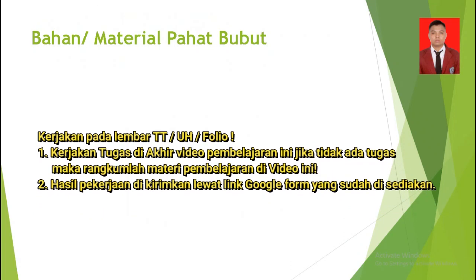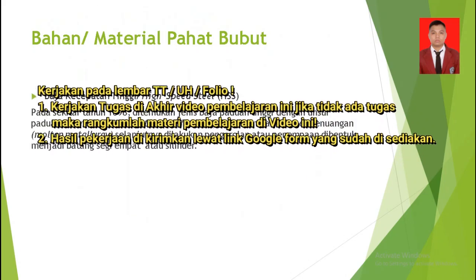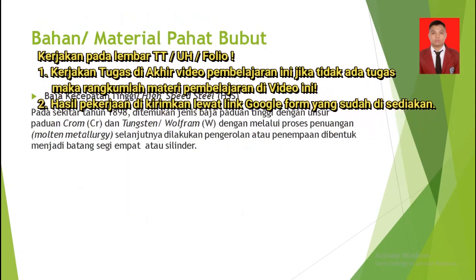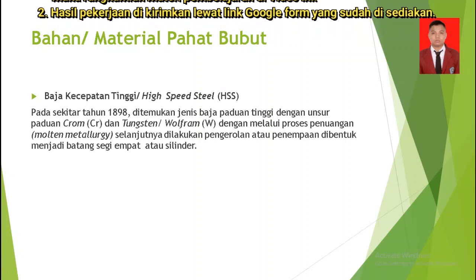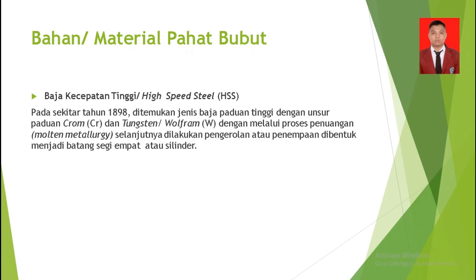Untuk bahan atau material pahat bubut yang pertama adalah baja kecepatan tinggi atau High Speed Steel (HSS). Ada sedikit sejarah: pada sekitar tahun 1898 ditemukan jenis baja paduan tinggi dengan unsur paduan krom (Cr) dan tungsten atau wolfram, melalui proses penuangan atau molten metalurgi, selanjutnya dilakukan pengerolan atau penempatan, dibentuk menjadi batang segiempat atau silinder.